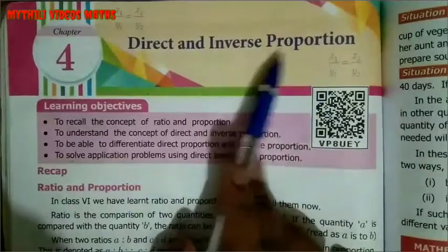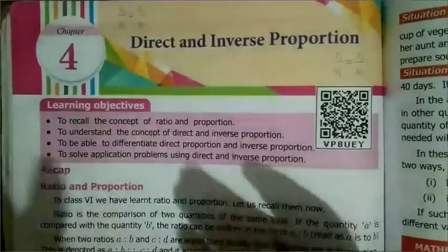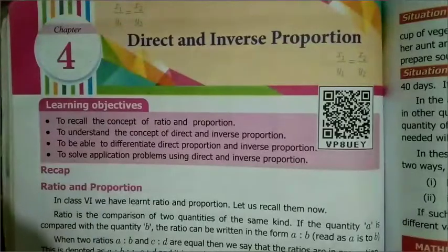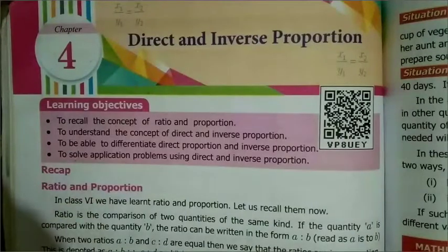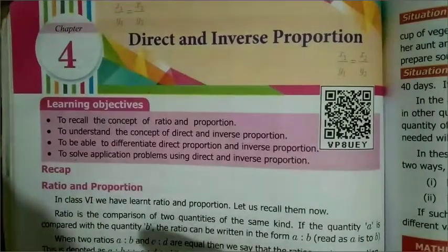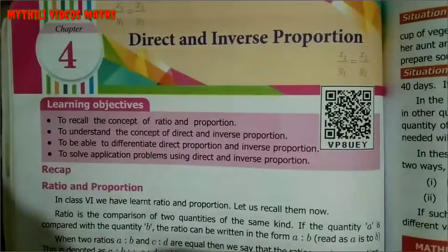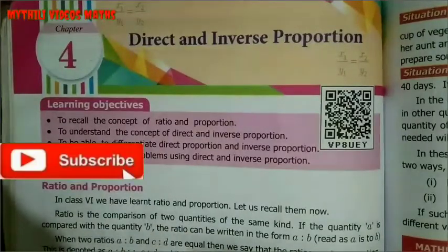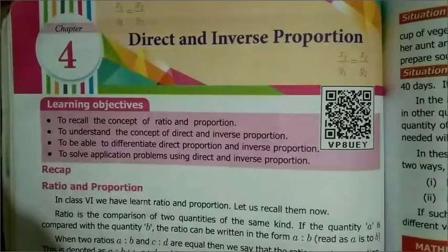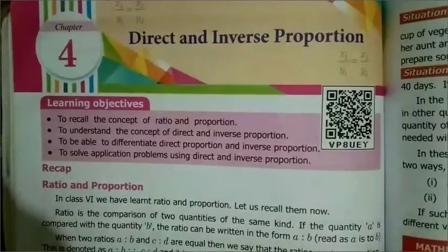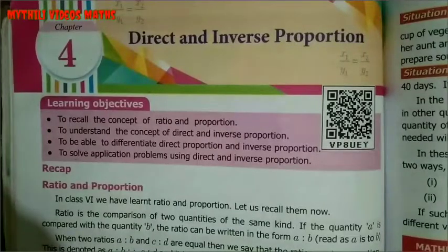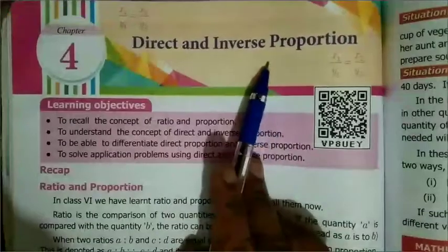Now for Inverse Proportion — when one quantity increases, the other decreases. So they move in opposite directions. When one increases or decreases and the other does the opposite, that is called Inverse Proportion.